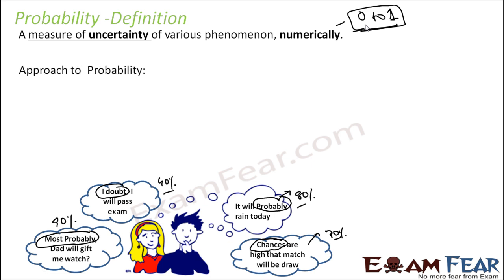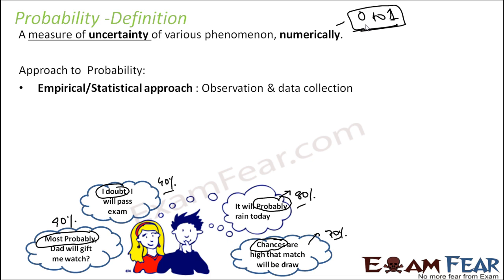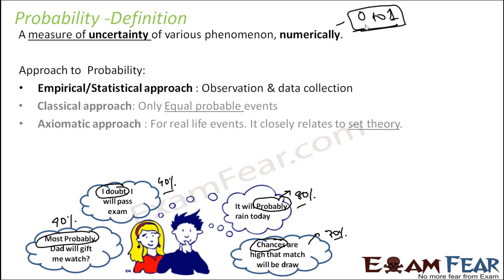Typically there are three approaches to probability. One is the empirical, statistical, or experimental approach, wherein we actually perform the experiment, observe and collect data, and based on that we come up with the probability figure. This is what we will study in this chapter. The next approaches are the classical and the axiomatic approach — we will study those in higher classes, as they use a lot of formulas and are more complicated.